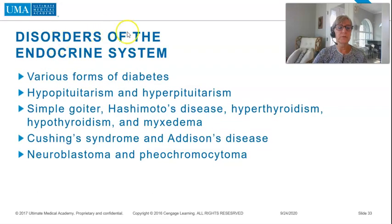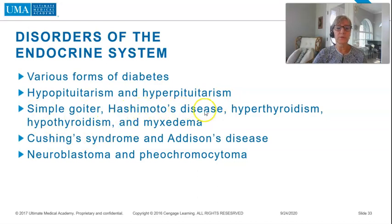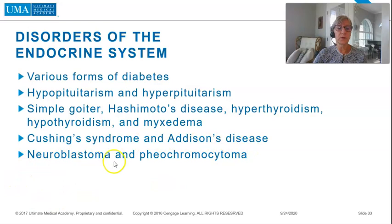Disorders of the endocrine system include various forms of diabetes, hypopituitarism and hyperpituitarism, simple goiter, Hashimoto's disease, hypothyroidism, hyperthyroidism, myxedema, Cushing's syndrome, Addison's disease, neuroblastoma, and pheochromocytoma.